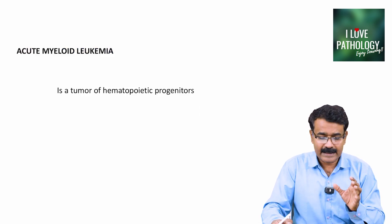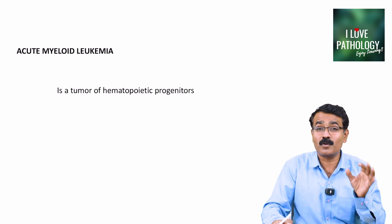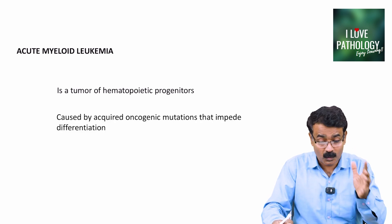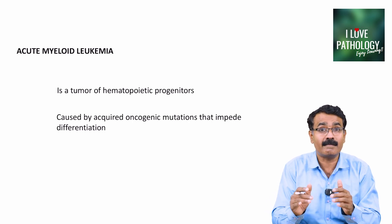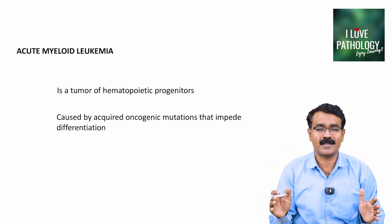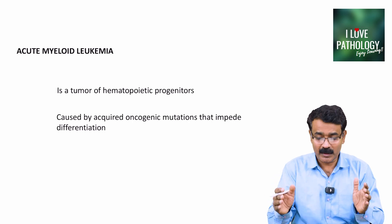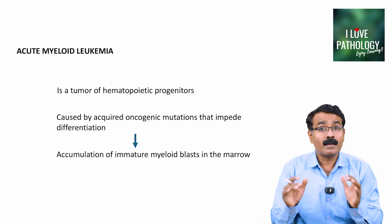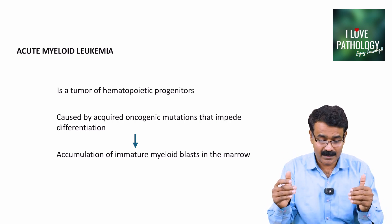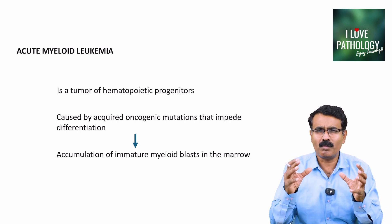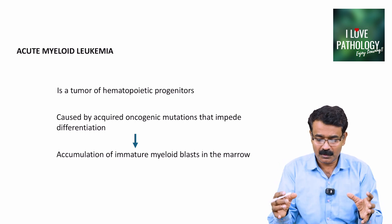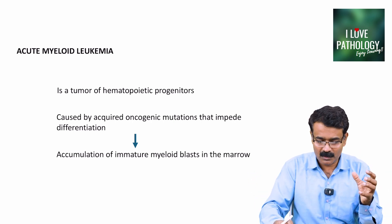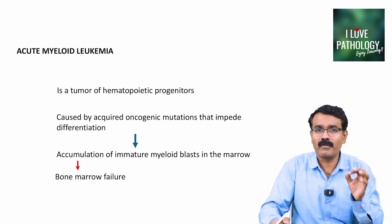What is acute myeloid leukemia? This is a tumor of hematopoietic progenitor cells, caused by acquired oncogenic mutations which arrest the differentiation of the progenitor cells. Because of the impediment of differentiation, there is accumulation of immature myeloid blast cells in the bone marrow, which leads to bone marrow failure.